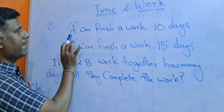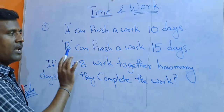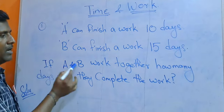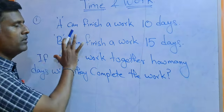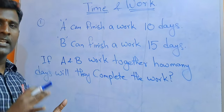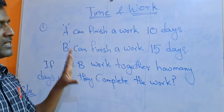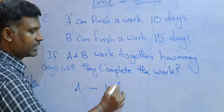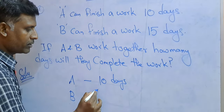A and one candidate will finish in 10 days. B and one candidate will finish in 15 days. If we work together, how many days will they complete the work? A and one candidate will be 10 days, B and one candidate will be 15 days.